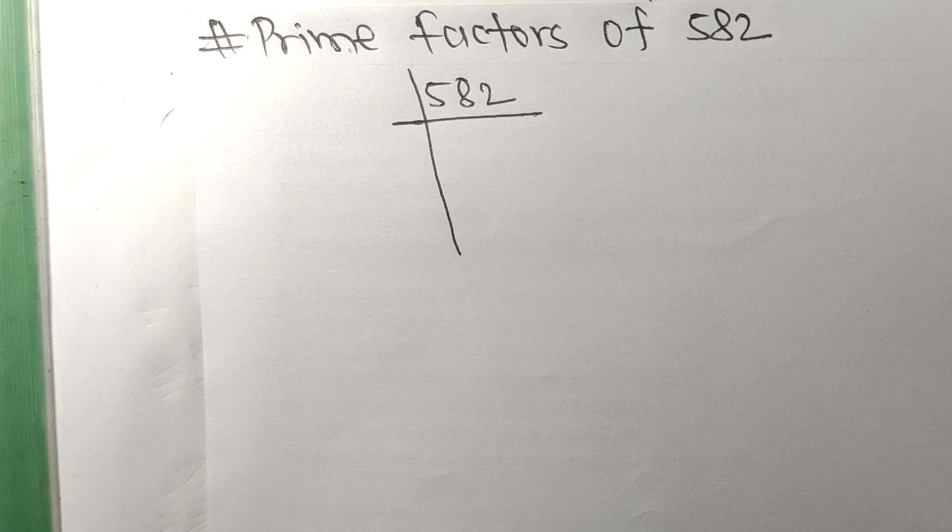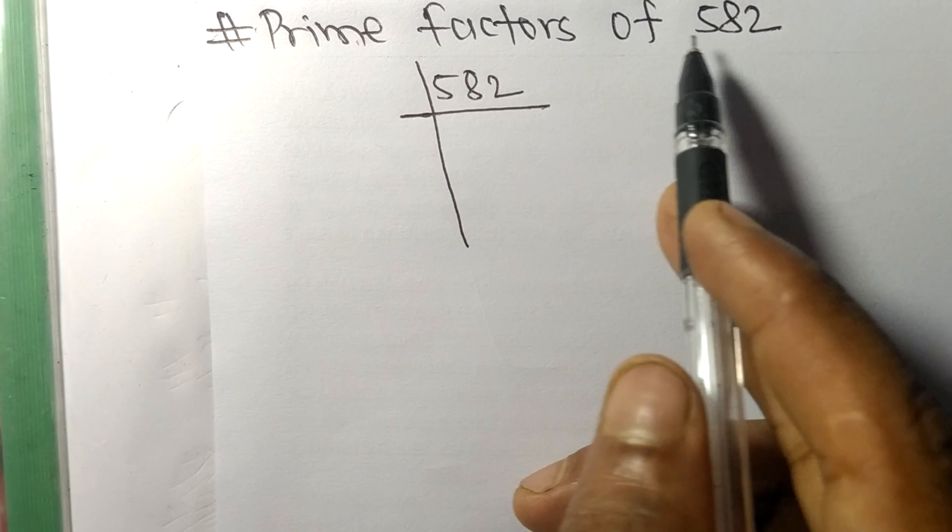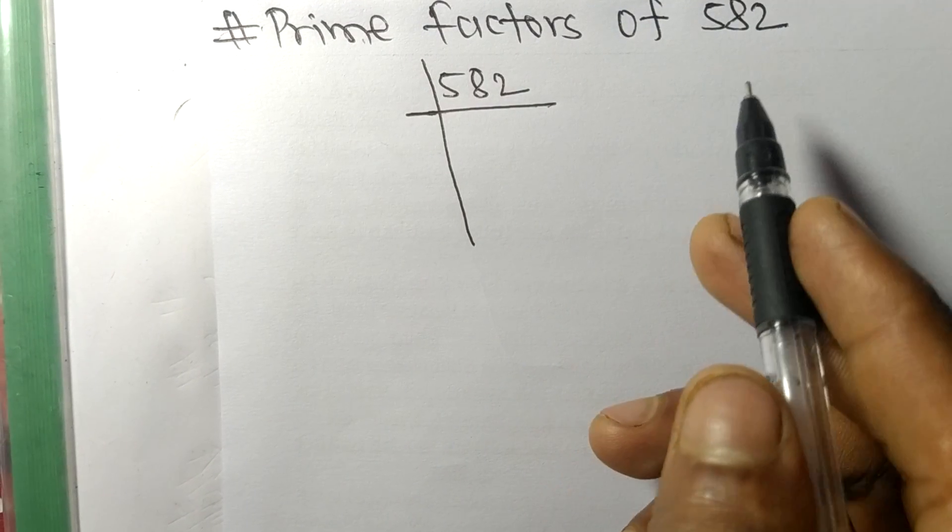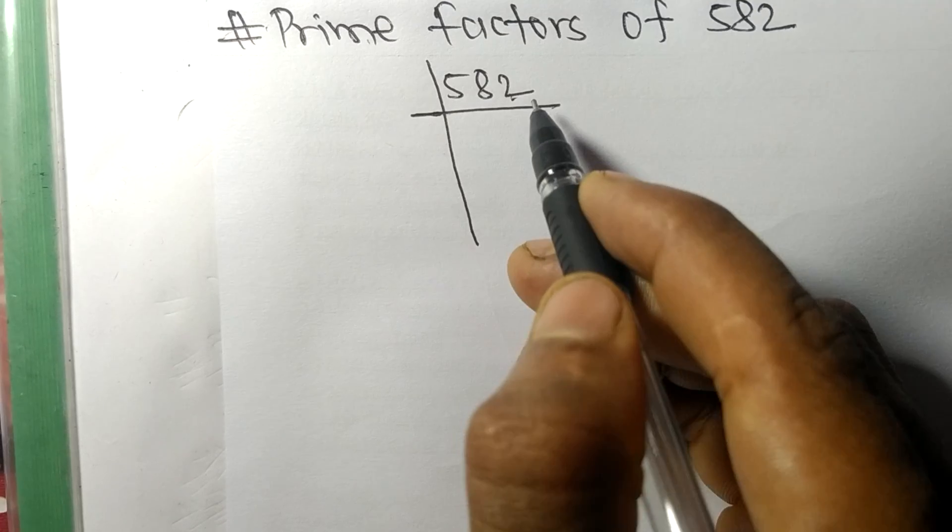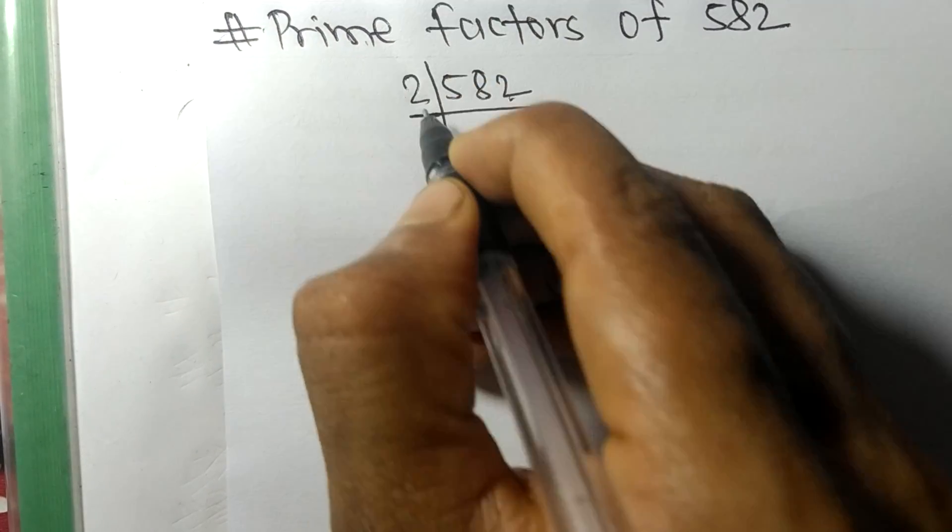So today in this video we shall learn to find the prime factors of 582. At last it contains an even number 2, so this whole number is divisible by 2.